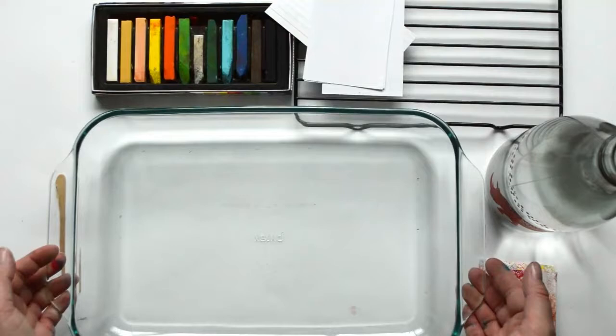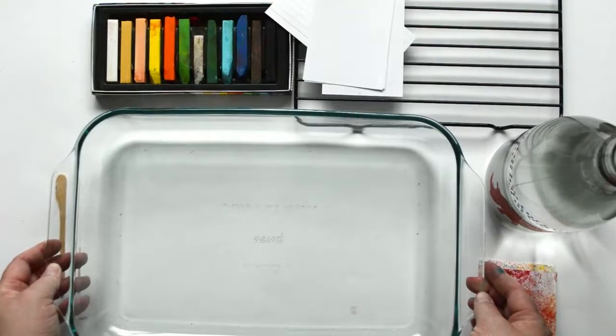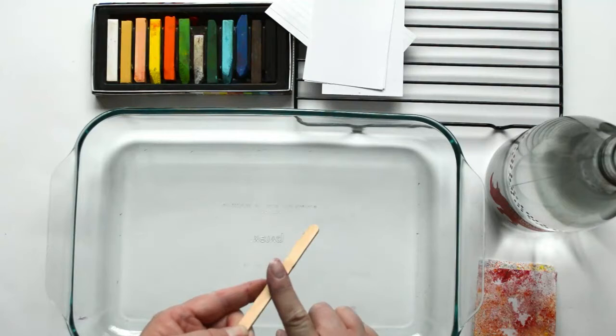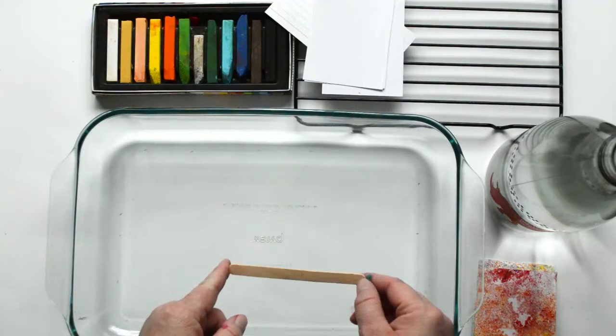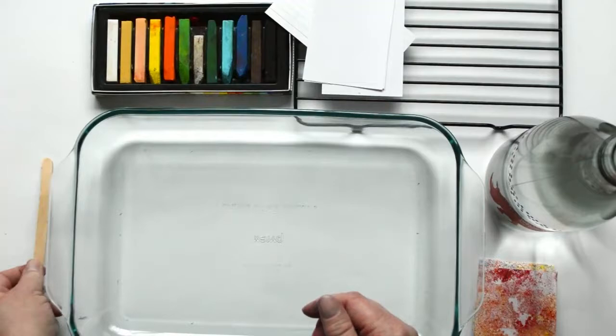A shallow dish that can hold about an inch of water. You need a popsicle stick or something that has a stiff side that you can scrape color with. So a gift card might work. A butter knife or a spoon could also substitute for that.